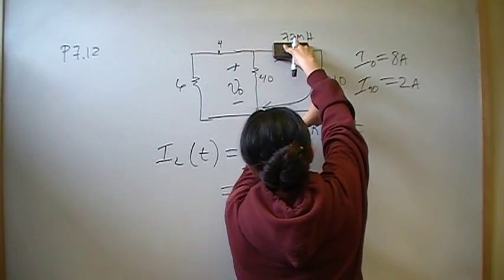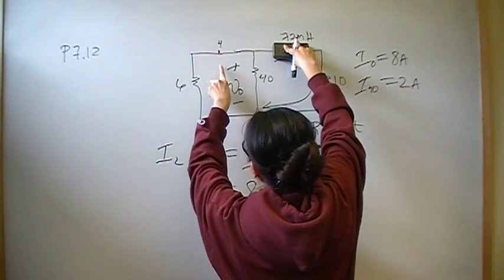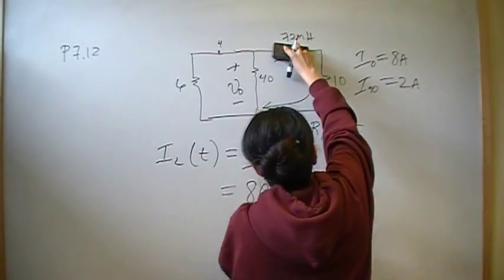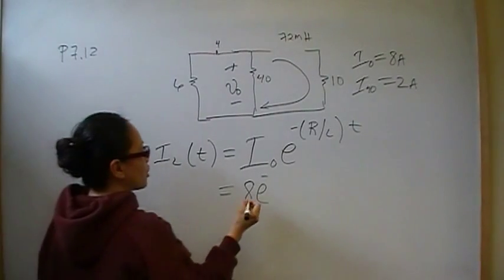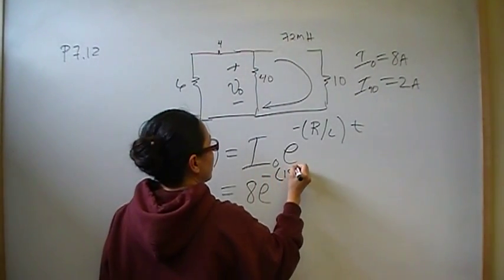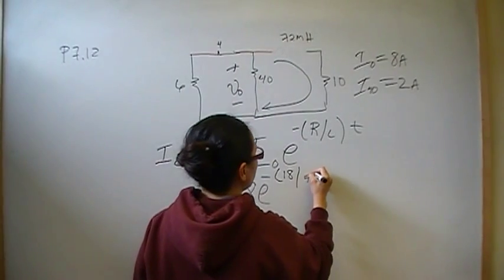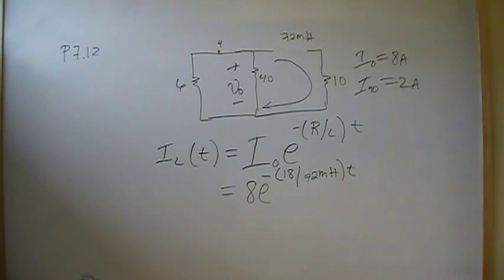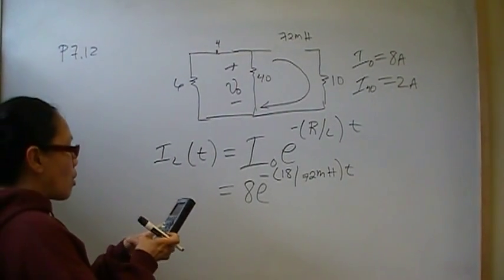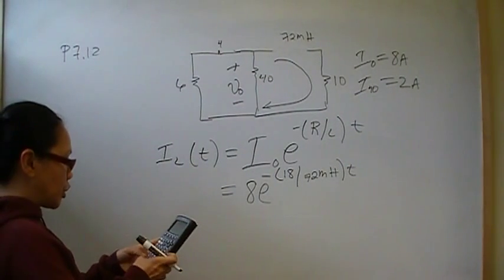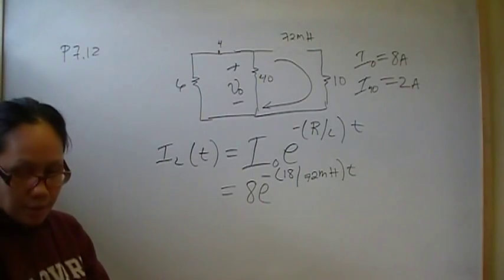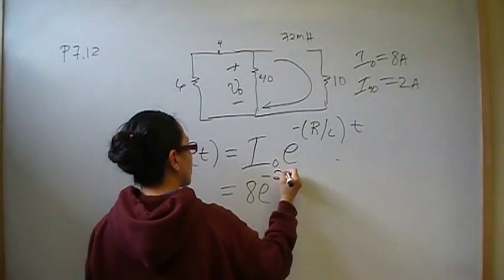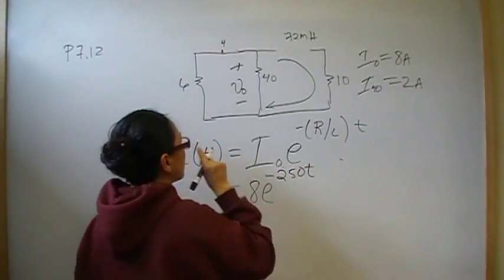Well, we would have, we'd be series connected to this, which is parallel connected to these two. So 10 parallel connected to 40 gives me 8, and 8 in series with 10 gives me 18. So that R is going to be 18. So we have negative 18 over 72 millihenries times T. That's our general equation for the current that's going to split. So 18 divided by 72E minus 3 is 250. So negative 250T. So that's our current.